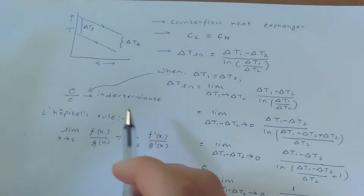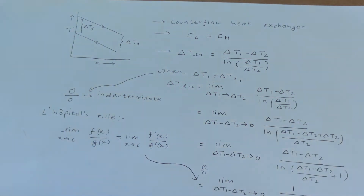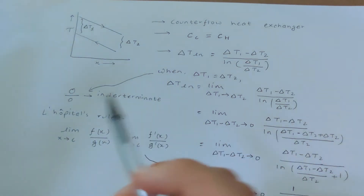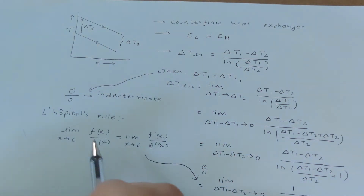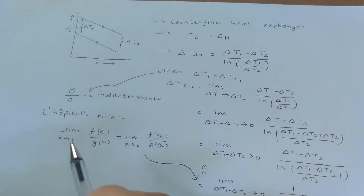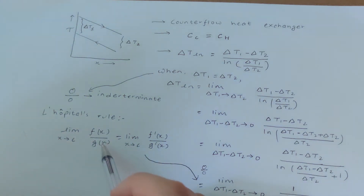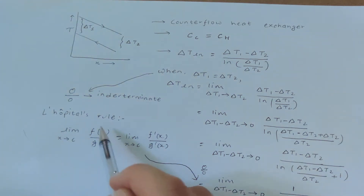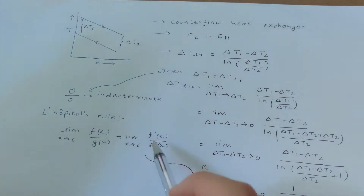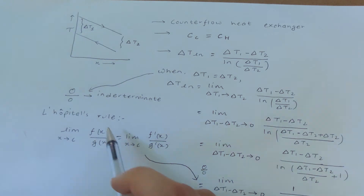We have a special rule to deal with this kind of problem, called L'Hôpital's rule. L'Hôpital's rule tells us that if we have an indeterminate form of zero over zero or infinity over infinity, all we need to do is differentiate the numerator and differentiate the denominator, and then take the limit.